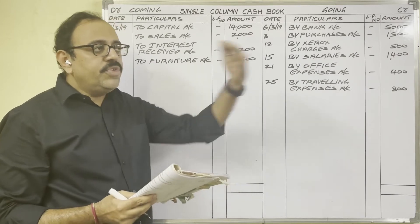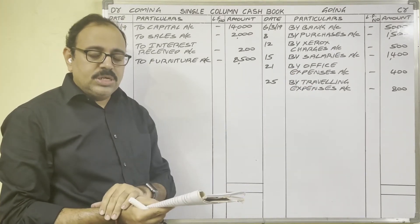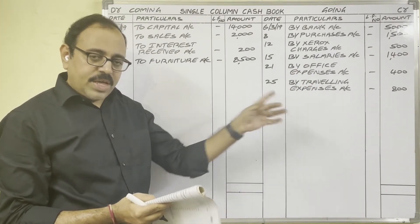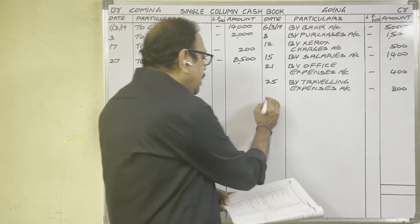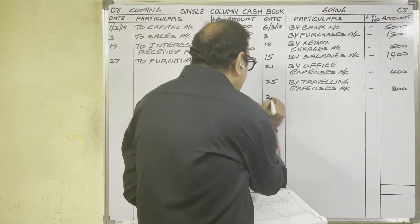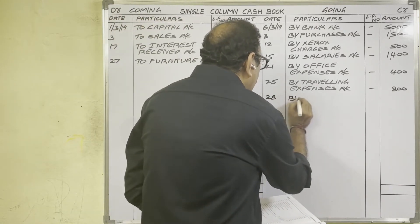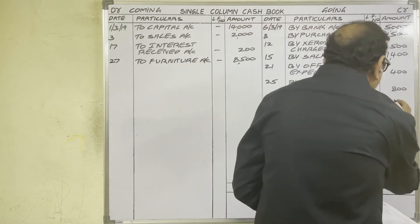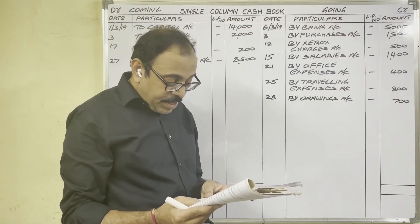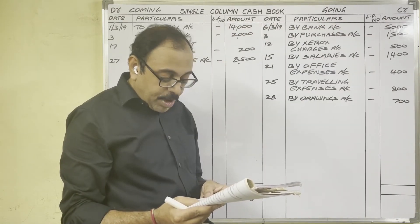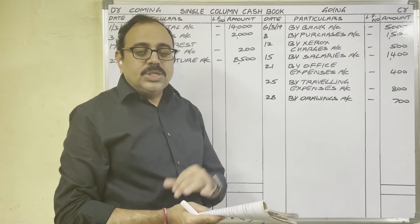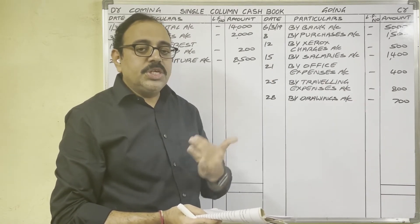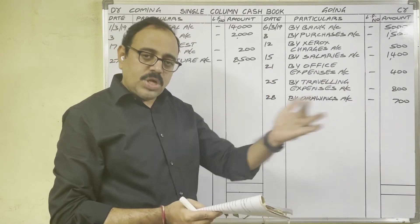28th day: drawings 700 rupees. The owner withdrew money for personal use, so cash is going out from the firm — credit side. Write: By Drawings account, 700 rupees.